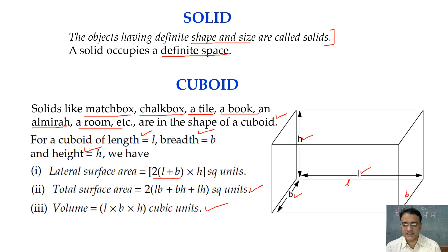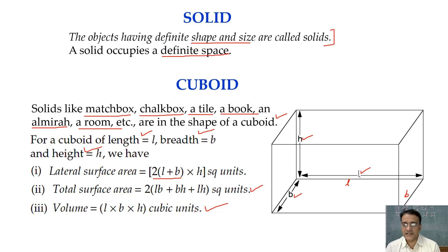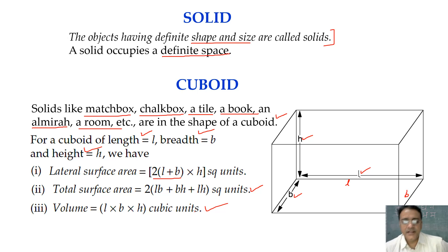Listen carefully: the first exercise is on cube and cuboid, the second is on cylinder, the third is on cone, and the fourth is on sphere and hemisphere — all four exercises are only based on surface area. Exercises 5 through 8 are completely based on volume. The fifth exercise is volume of cuboid and cube.